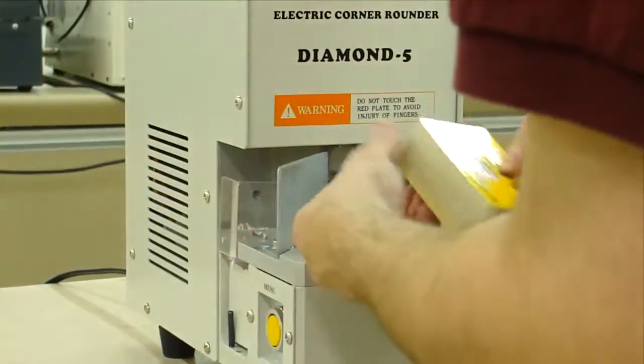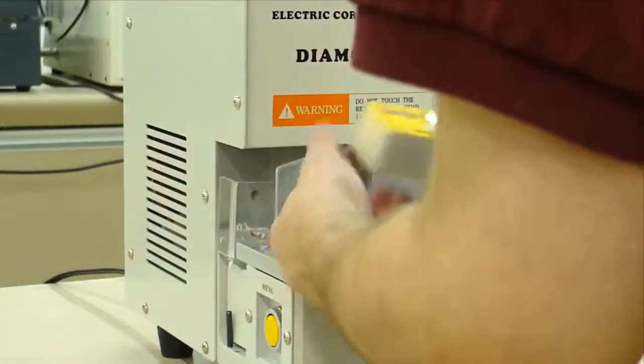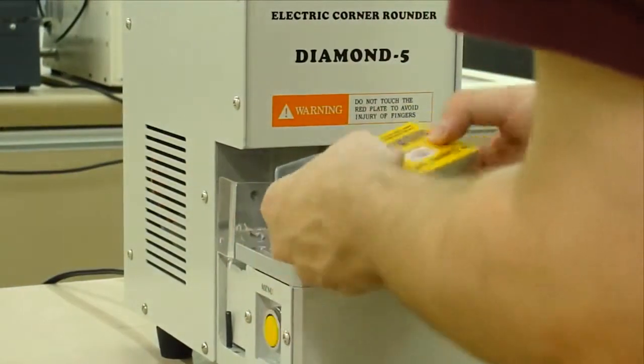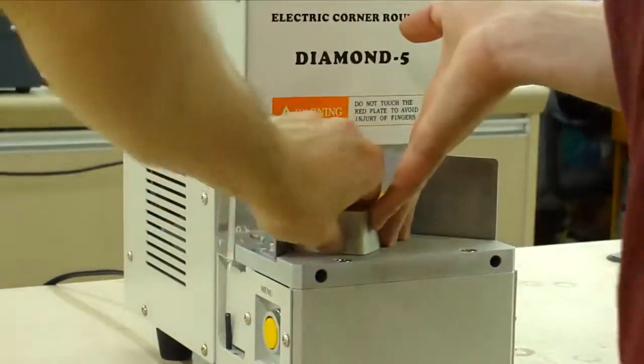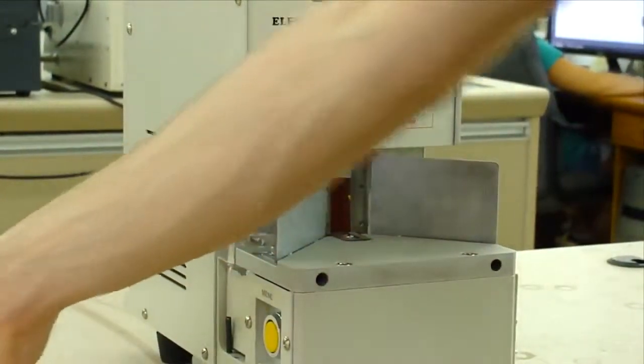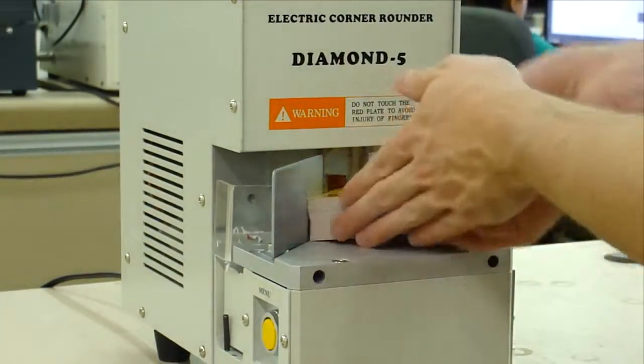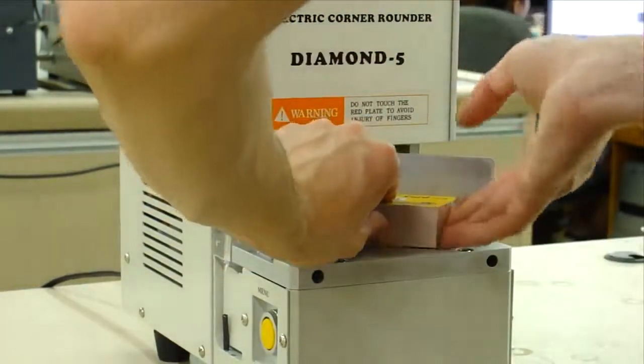You can get multiple dies for your Achilles Diamond Round Cornering Machine. They come in multiple sizes including one-eighth, one-quarter, three-eighths, a straight corner, and a half moon.